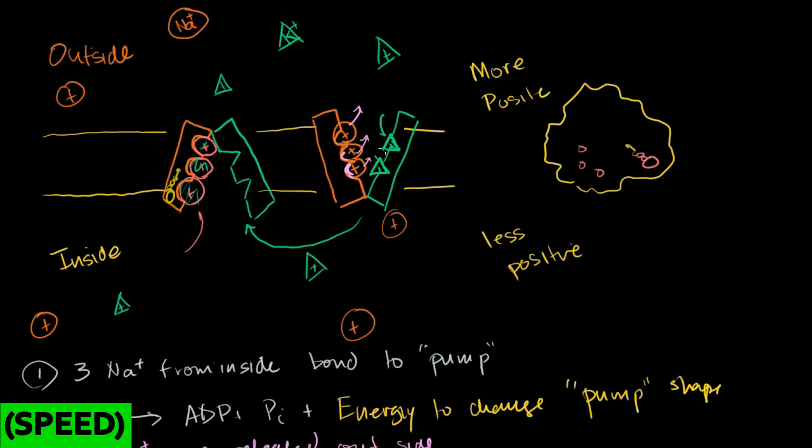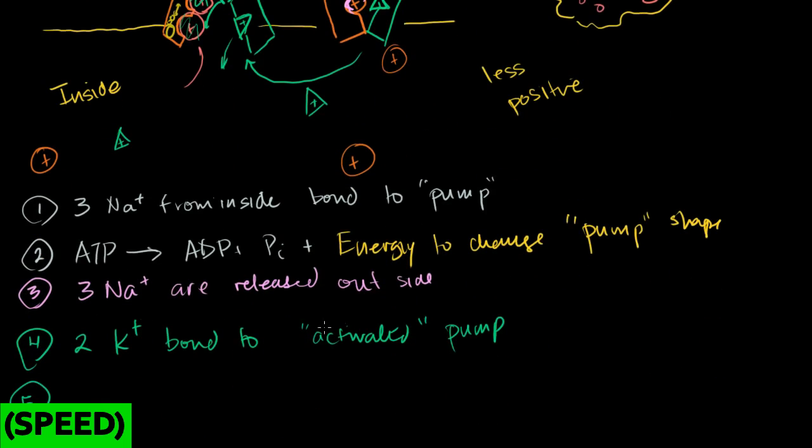Now when it goes back to the open shape, these guys aren't here anymore, but we have these two potassium ions sitting here. And in this shape right here, all of a sudden they're not as good at staying bonded or holding on to these potassiums, so these potassiums get released into the cell. Step five, the pump changes shape to original, and then once we're in the original, those two potassium ions are released inside the cell. We're going to see in the next few videos why it's useful to have those sodium ions on the inside.